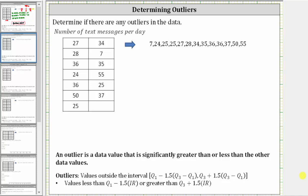We are asked to determine if the data contains any outliers. Notice how we have the number of text messages per day, and we have a total of 13 data values, which means n is equal to 13.